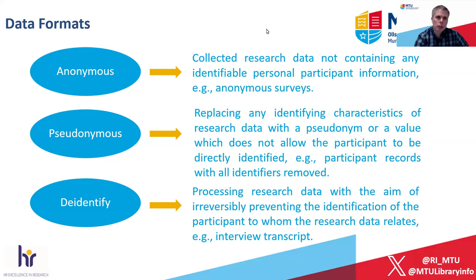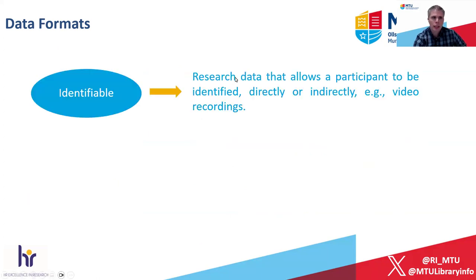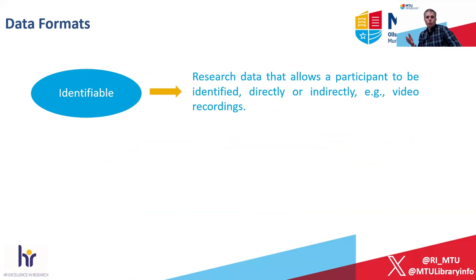If we have an idea of what anonymous, pseudonymized, and de-identified mean, then what is identifiable? Identifiable is where your data allows a participant to be identified. The simplest example: if you have a video recording with participants whose faces are visible, then your data is identifiable. There's also a term called 'potentially identifiable.'